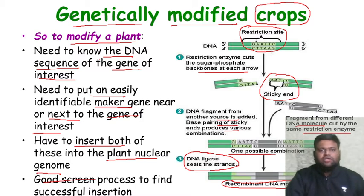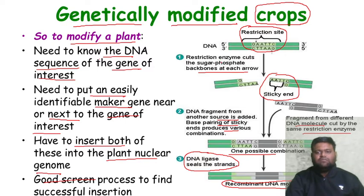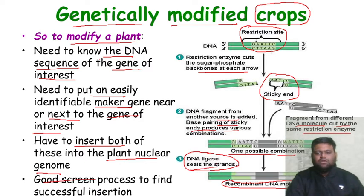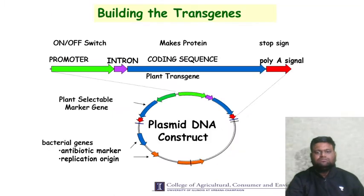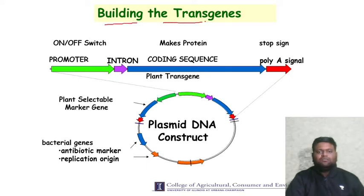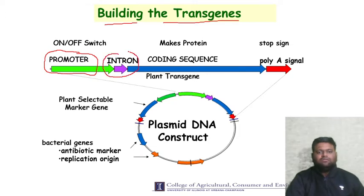This is how you create a genetically modified organism. Restriction enzymes act at restriction sites, cutting the sugar-phosphate backbone to create sticky ends. DNA fragments from another source are added, base pairing of sticky ends produces various combinations, and fragments from different DNA molecules cut by the same restriction enzyme are joined. DNA ligase seals the strands to create the recombinant DNA molecule. The transgene consists of a promoter sequence, an intron sequence, a plant transgene, and a poly-A signal sequence.